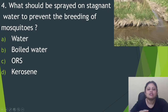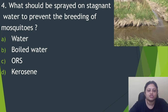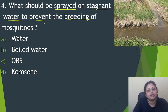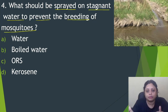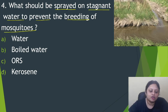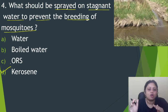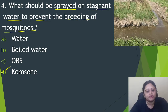Next question: what should be sprayed on stagnant water to prevent the breeding of mosquitoes? Option A, water. B, boiled water. C, virus. D, kerosene. We just read that in stagnant water, breeding of mosquitoes occurs, and it is not good. So we should do something to prevent mosquito breeding in stagnant water. We spray kerosene on it, and then there will be no more breeding of mosquitoes. That is why the correct answer is option D, that is kerosene.